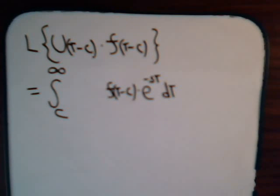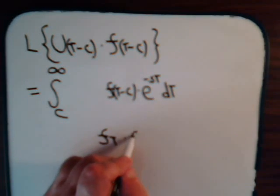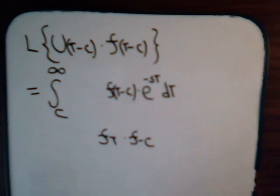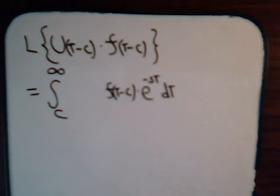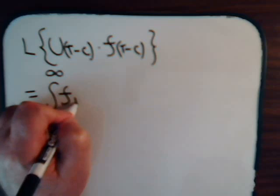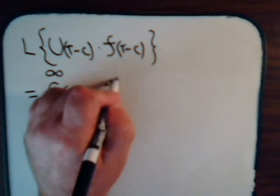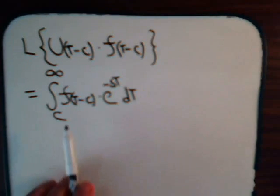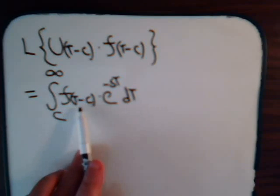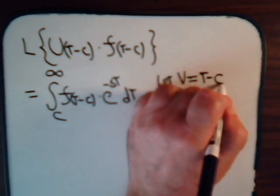Now how do we take this Laplace transform? We have f of t minus c times e to the minus st. We can't say that equals f of t times f of minus c — that's nonsensical, it certainly isn't going to work. So what we do is try a variable change. Let v equal t minus c.